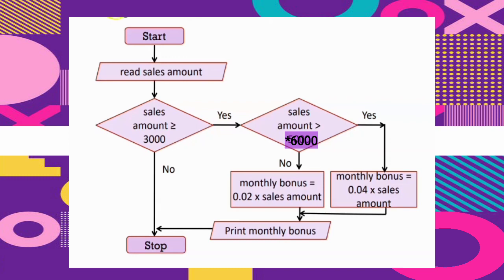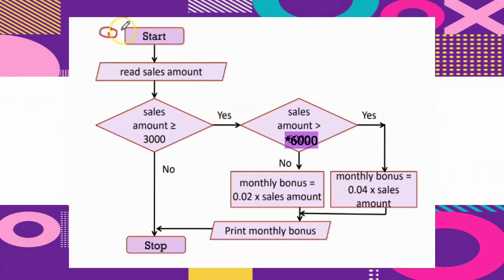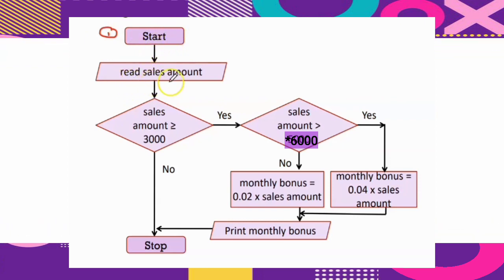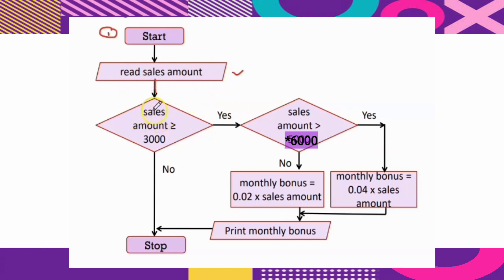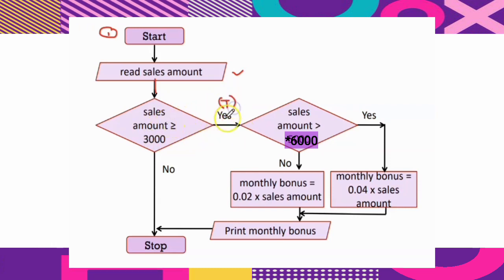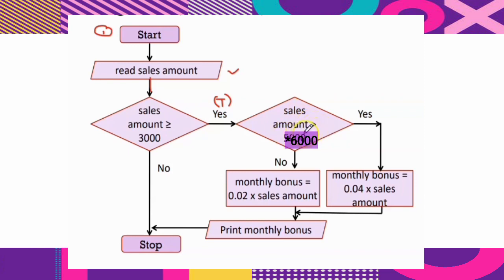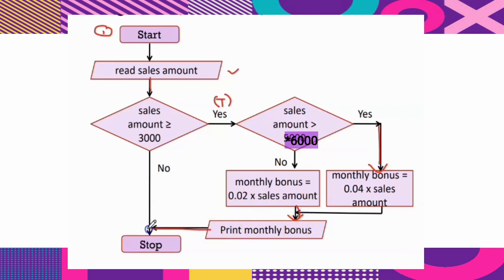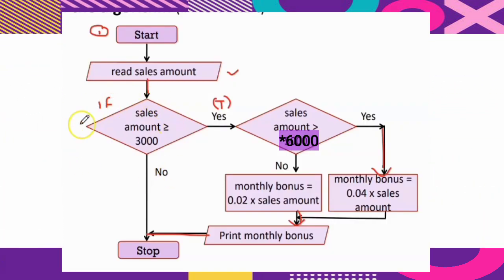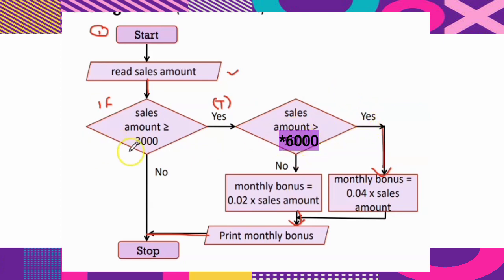Third, we draw the flowchart. Start using a terminal symbol (capsule shape), then READ sales amount. Check the first condition: if sales amount is greater than or equal to 3,000 — if yes, check the second condition. If the second condition is true, monthly bonus equals 0.04 multiplied by sales amount. If the second condition is false, monthly bonus equals 0.02 multiplied by sales amount. Then print bonus. If the first condition is already false, go directly to STOP with no calculation needed.